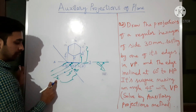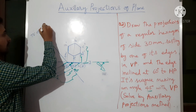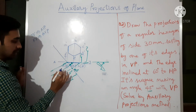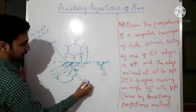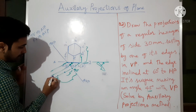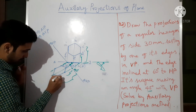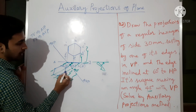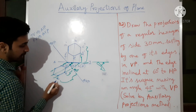Measure the distances from the old XY line, then transfer them from the new XY line. Here we are doing the front view, so we obtain an auxiliary vertical plane. This is the auxiliary vertical plane (AVP). By measurement we transfer all points. D is the closer one, C is farther — so here D is closer and C is already marked farther.